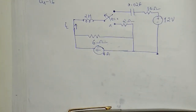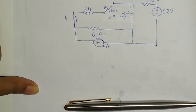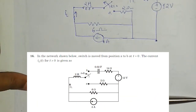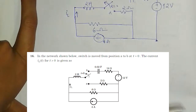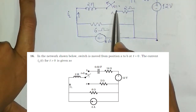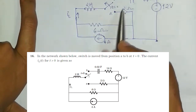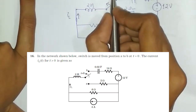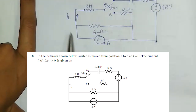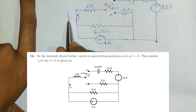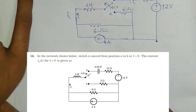Hello friends, welcome to GateGam. In this problem, we have been given a network which is initially at position A, and at t equal to 0 plus it moves to position B. We have to find the expression of the current I passing through the inductor.